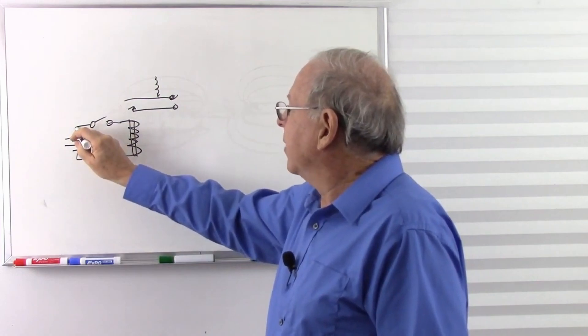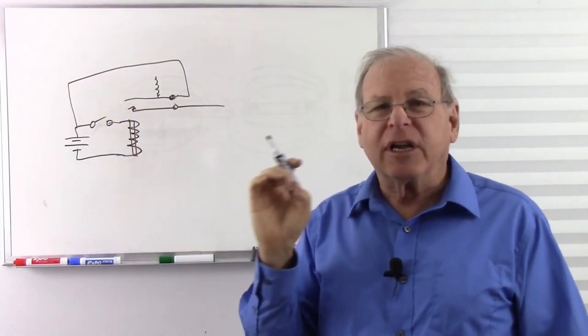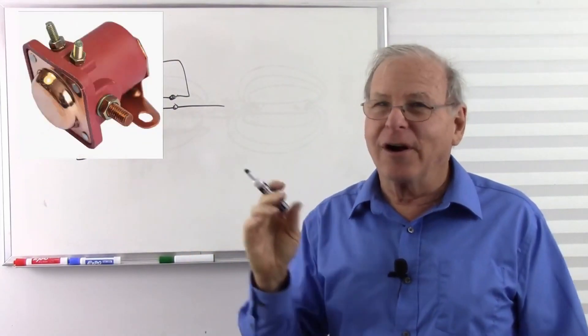And this battery, I'll just draw it this way, goes to the relay, which is usually called a solenoid in a car.